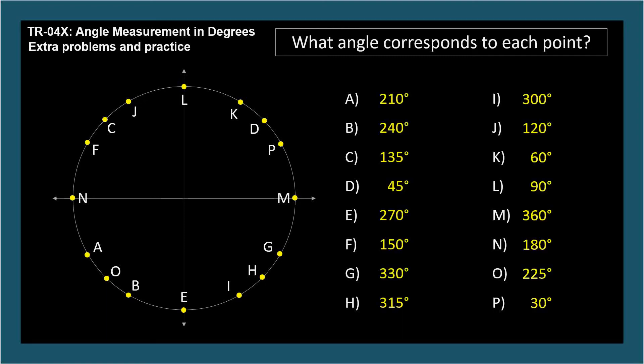The key takeaway from TR-04 is the duality implied by saying that a point on a circle corresponds to a particular angle. A point and an angle are different things.